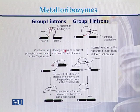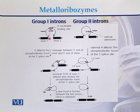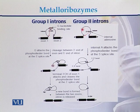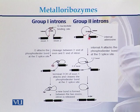Once it attacks, there is cleavage between the 3' end of the exon and the 5' end of the intron. While in case of group 2 introns, there are two exons with the intron sequence between them. An internal A attacks the phosphodiester bond at the 5' splice end. So this is the difference between group 1 introns and group 2 introns.